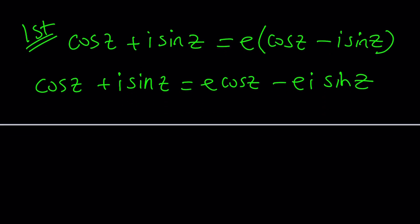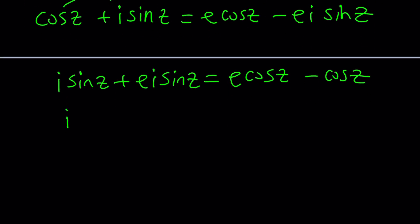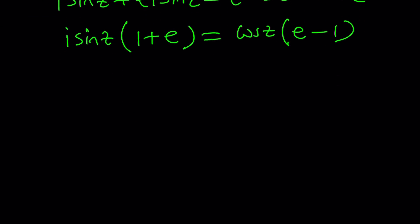And now we can go ahead and distribute cosine z plus i sine z equals E cosine z minus E i sine z. Let's go ahead and put the cosines together and I think if we do it on the right hand side, everything will be positive. So let's keep the i sine z here, bring over the E i sine z, and then bring the cosine z by subtracting over here to the right hand side.